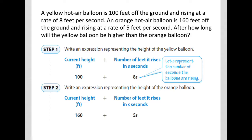Let's see what example 1 is all about. A yellow hot air balloon is 100 feet off the ground and rising at a rate of 8 feet per second. An orange hot air balloon is 160 feet off the ground and rising at a rate of 5 feet per second. The question asks: after how long will the yellow balloon be higher than the orange balloon — that is, when will it make up those 60 feet and supersede it?